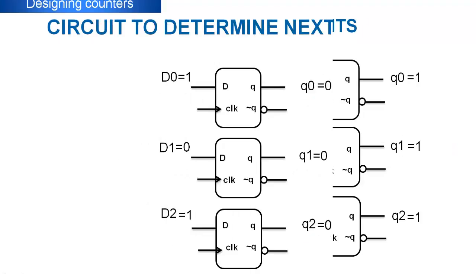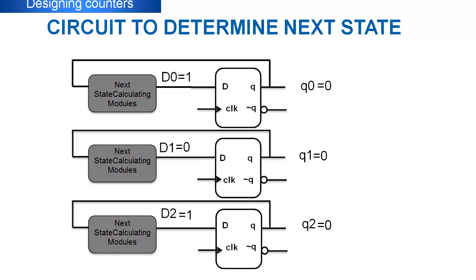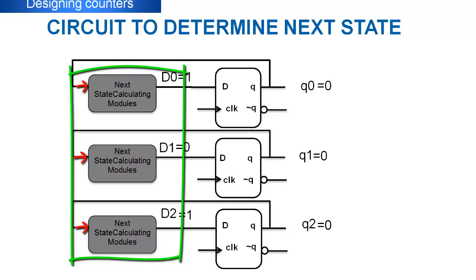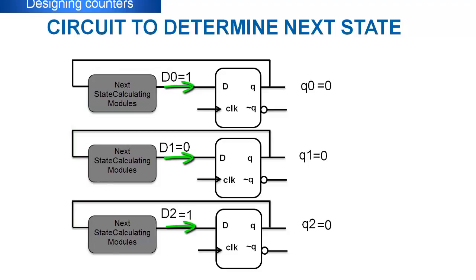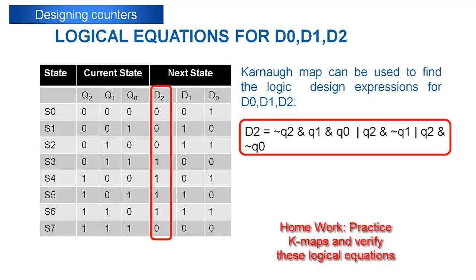Now we come to the most important part of counter design. We talked about next state calculating modules in previous slide. Yes, next state calculating modules are actually combinational circuits whose outputs are purely dependent on their inputs. They take Q0, Q1 and Q2 as their respective inputs, determine the next state and make them available at their outputs, which are directly connected to the inputs of flip-flops D0, D1, and D2. Now we need to design this next state calculating modules. For that, take a look back at the truth table. We have mapped their behavior already. With the help of these behavior maps, we can drive logical expressions for them.